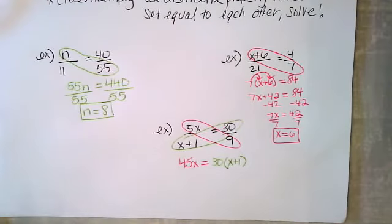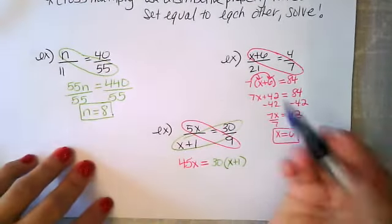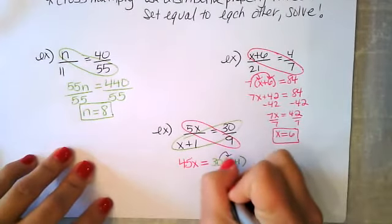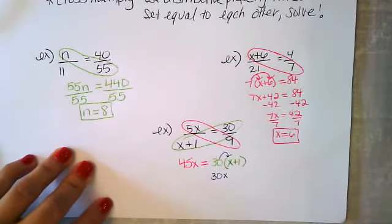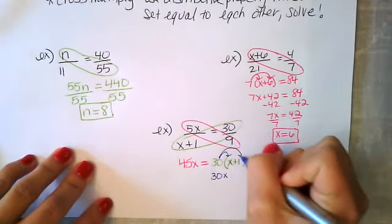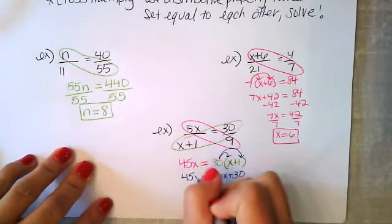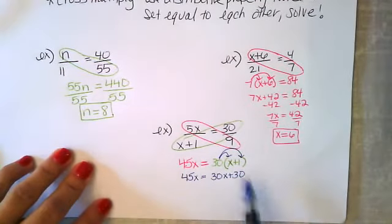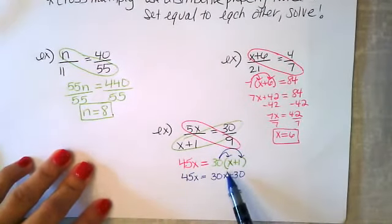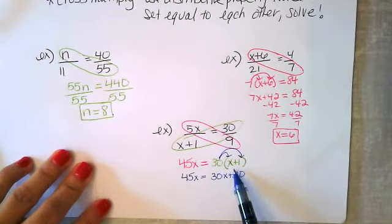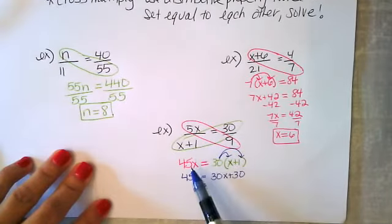We are going to multiply 30 times x, giving us 30x. 30 times 1 gives 30, and then I'm just going to bring down my 45x. So use the distributive property here—make sure that you use it on both terms. This is a little bit simpler, so we just brought it down.